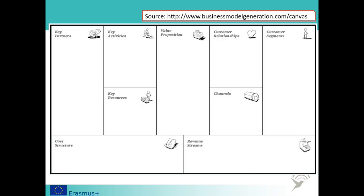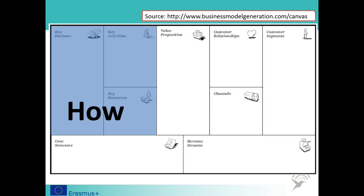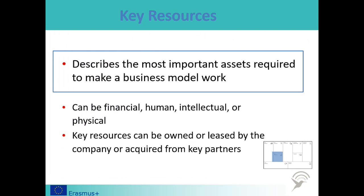We will now look at how to make your business plan happen. The 'how' covers three building blocks: key resources, key activities, and key partnerships. The key resources refer to the most important assets required to make a business model work. These resources need not only be financial or even human — they can also be intellectual or physical. These resources can be owned or leased by your business, or acquired by your key partners.